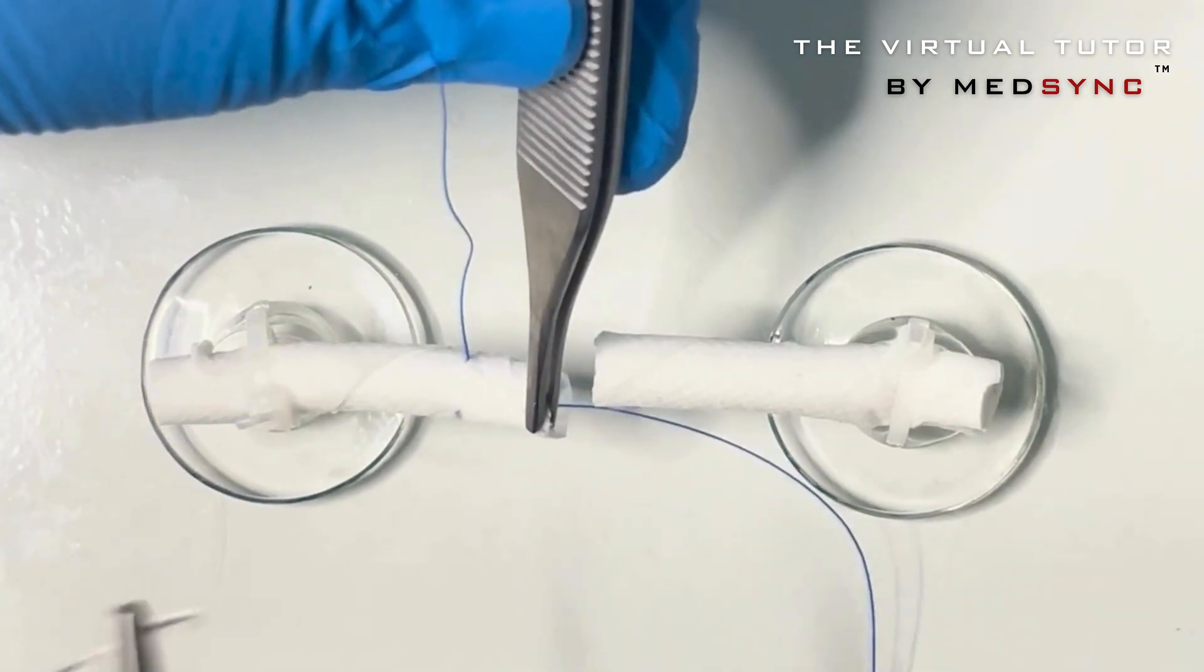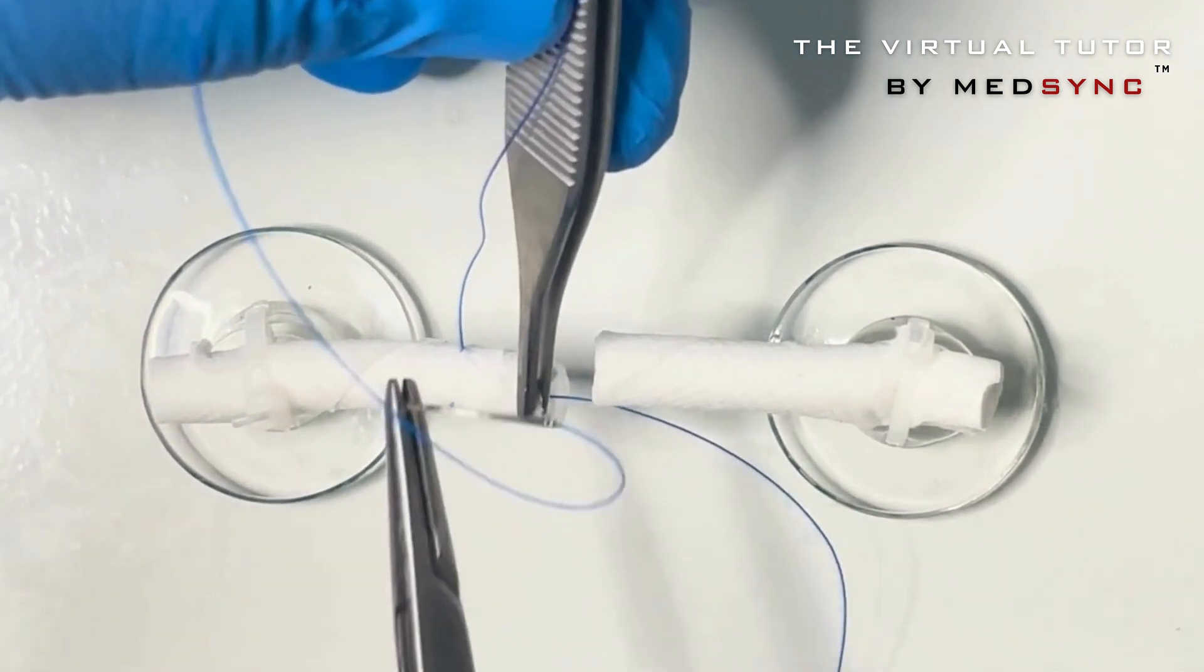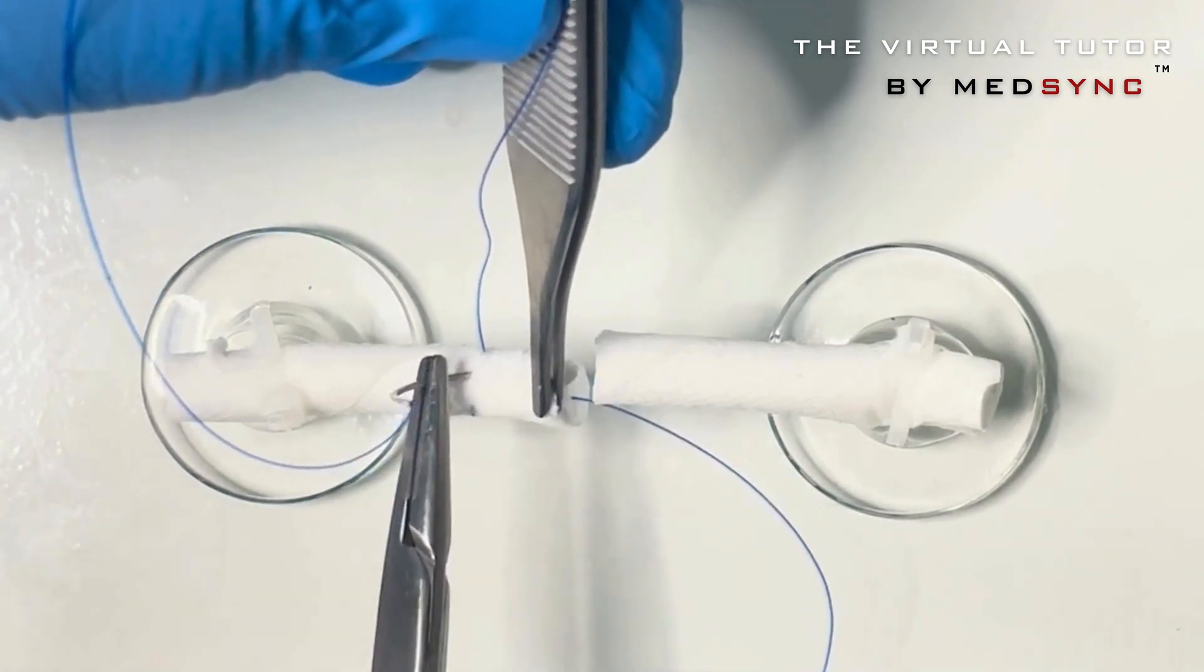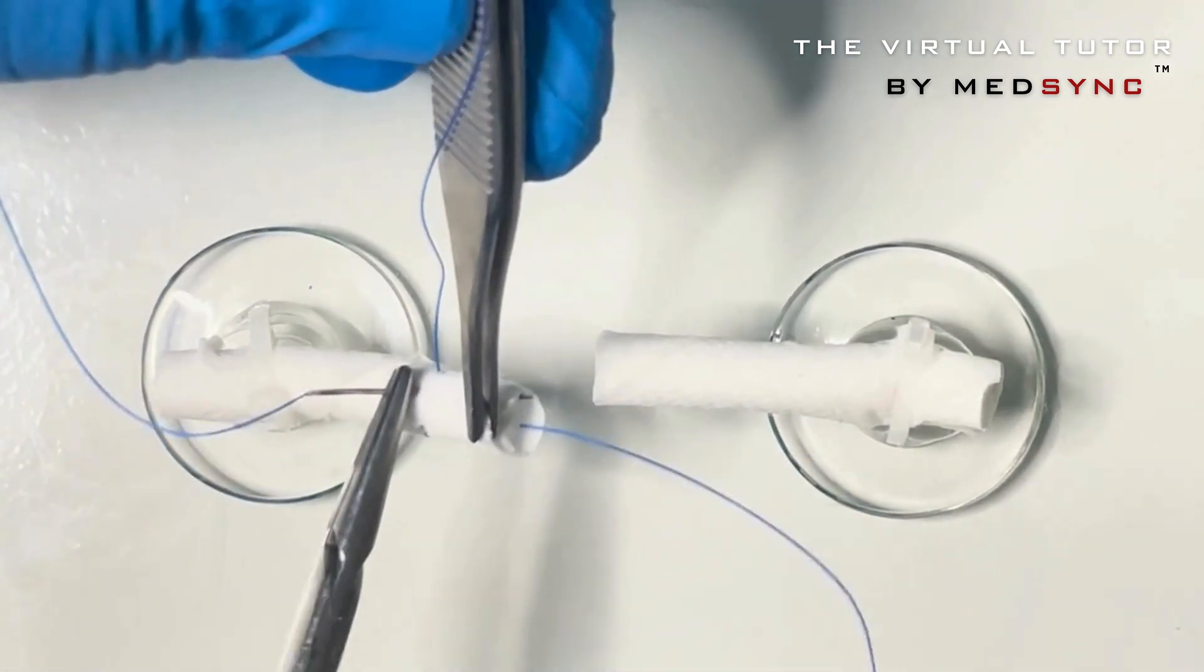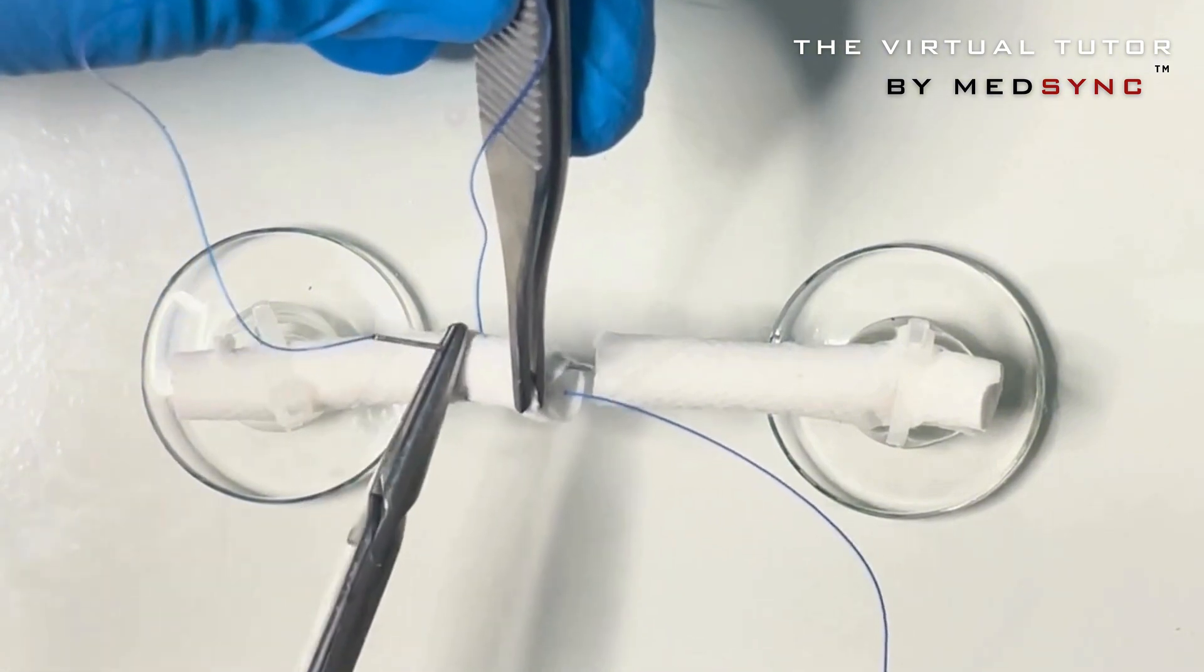You finish with a straight bite, mirroring the first but starting far and ending in the middle at the site of the cut tendon ends.